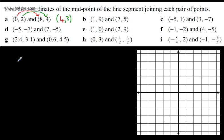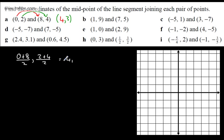Using the formula: x's added together — 0 plus 8 divided by 2 gives 4; y's added together — 2 plus 4 divided by 2 gives 3. The midpoint is (4, 3), as expected. You could of course draw it, but that would be unnecessary.